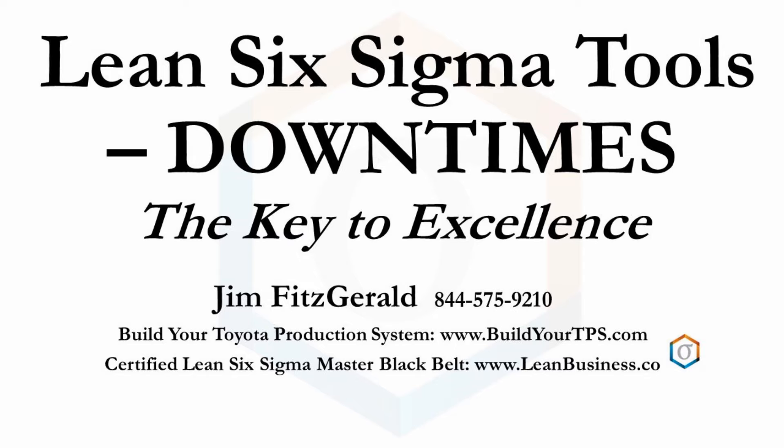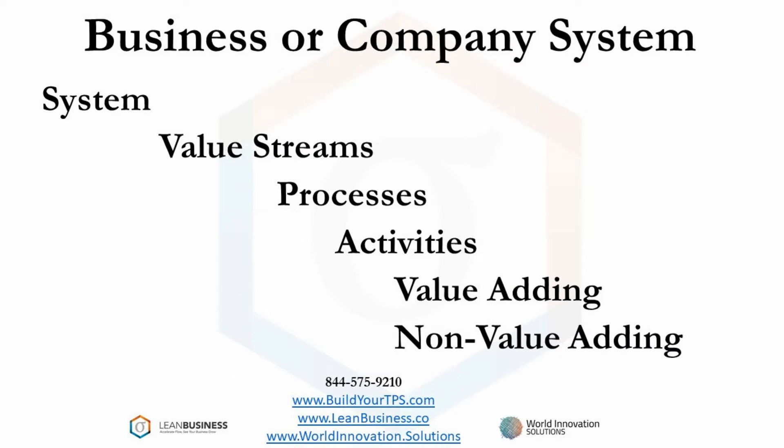I will start with an overview of your company system. A business or company system is comprised of value streams. A value stream is an aggregation of all the processes needed to provide a service to a customer or deliver internal functionality. A value stream focuses the business on the value add created. Value streams consist of processes, and processes consist of activities. Most activities do not add value — and that is what DOWNTIMES makes your business aware of.